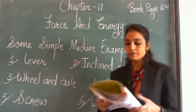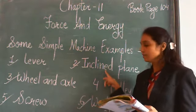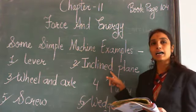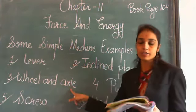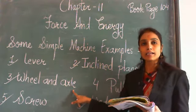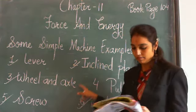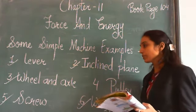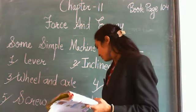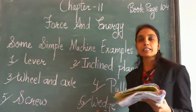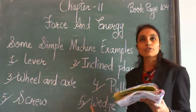Quick recap: a lever is a rigid rod fixed at a point called fulcrum. An inclined plane is a sloping surface with one end higher than the other. Wheel and axle is when a wheel is attached to a rod. A pulley is a disc with a groove ring. A wedge is two inclined planes meeting at a sharp edge.